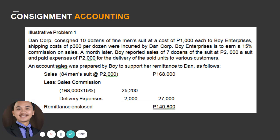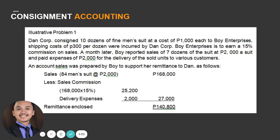From the given data: the cost of inventory is $1,000 per unit, which will be debited to cost of goods sold upon sale — so that's $84,000 total for 84 units. The $300 per dozen shipping cost is considered an inventoriable cost — a freight-in cost — so it will be added to the total cost of consigned goods.